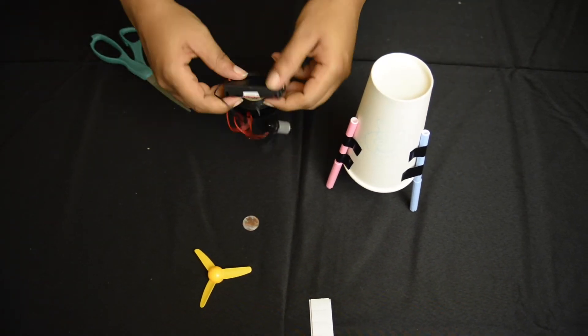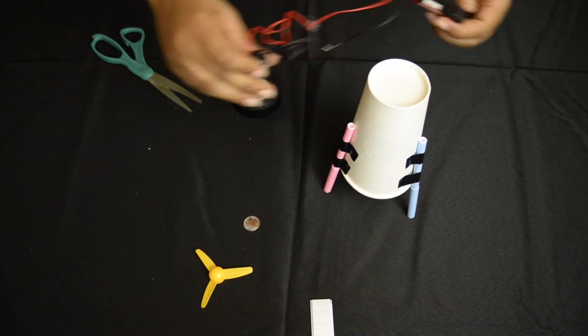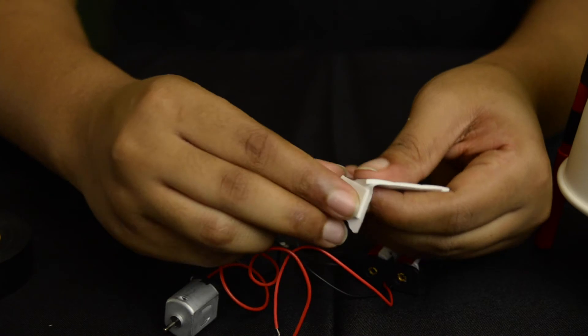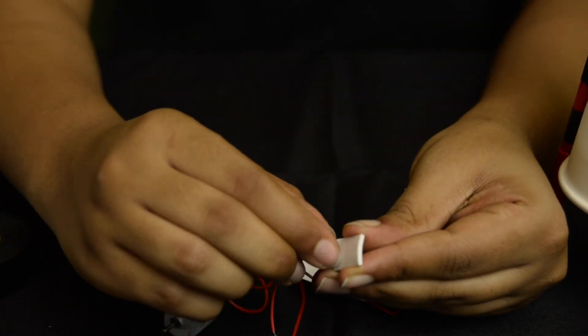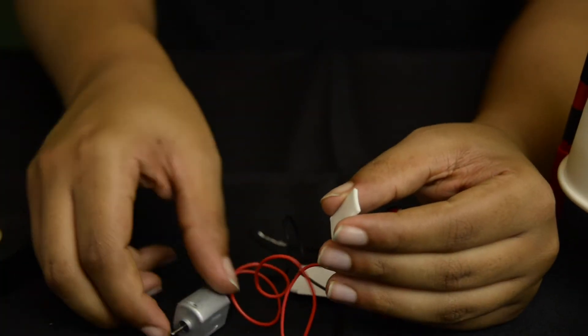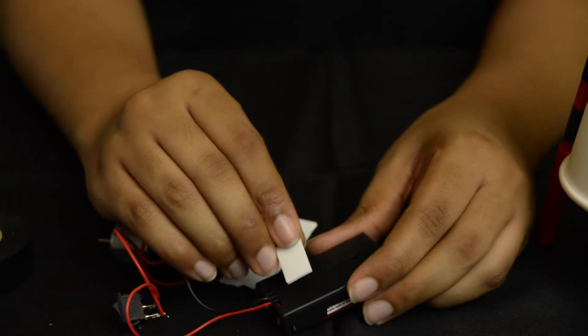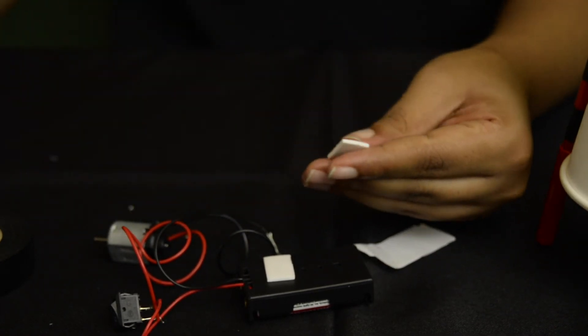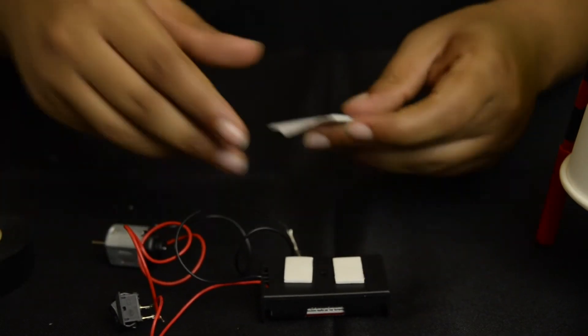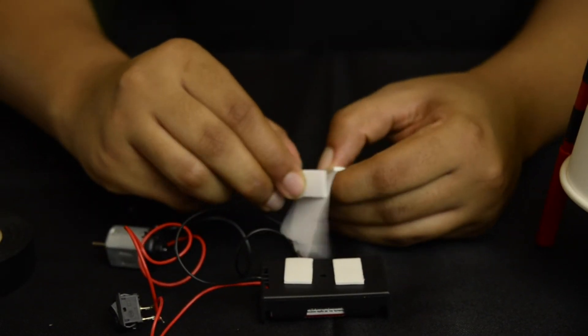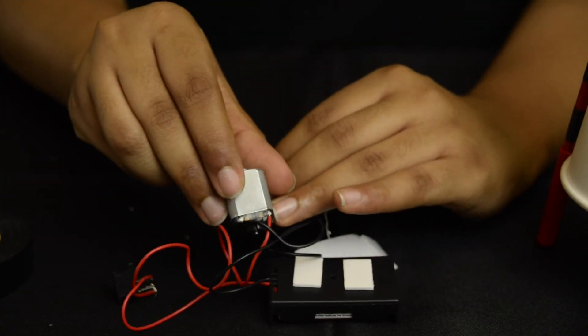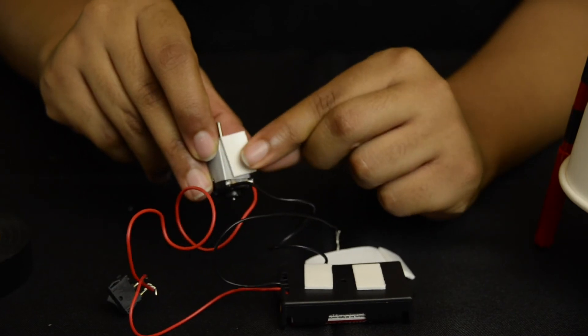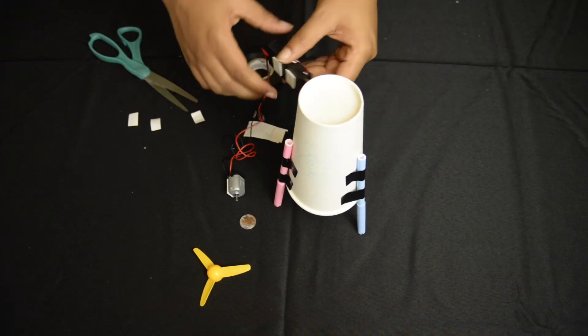Now moving back to the battery pack and motor. Place double-sided tape on both. Now make sure the tape is on the smooth side of the motor. Now attach the battery pack to the top of the cup.